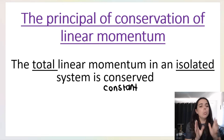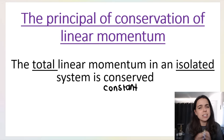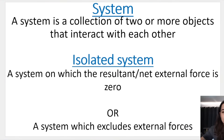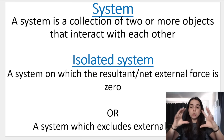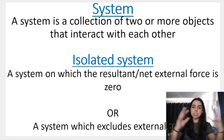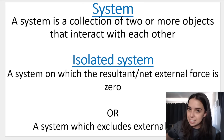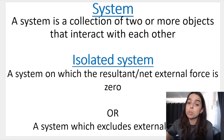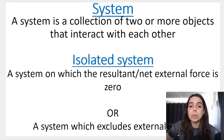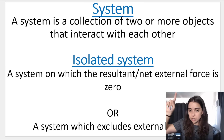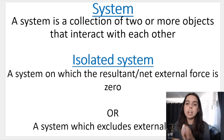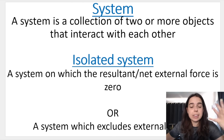What do we mean by 'system' and what do we mean by 'isolated'? A system is a collection of two or more objects that interact with each other — for example, car A and car B that collide, or you could have an explosion. An isolated system — the type we work with in momentum — is a system on which the resultant or net force is zero, or a system which excludes external forces. We basically ignore things like friction in such a system.